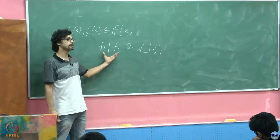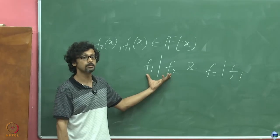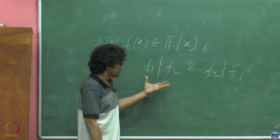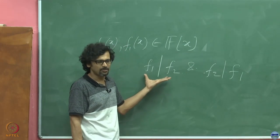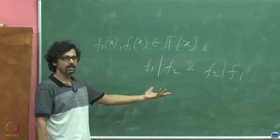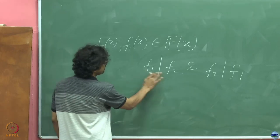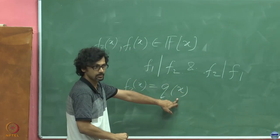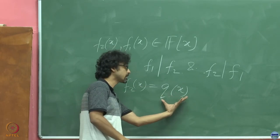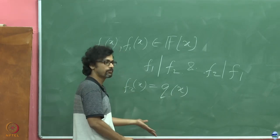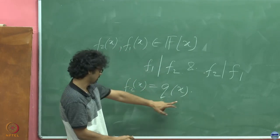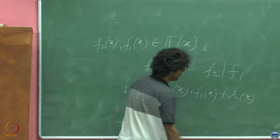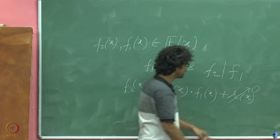when f_1 divides f_2, it means that this division leaves a remainder of 0. This is the division of one polynomial by another. Just as we write for numbers, we also have a similar representation for polynomials: f_2(x) equals some quotient polynomial times the divisor plus some remainder, and our claim is that this remainder will be identically the zero polynomial.